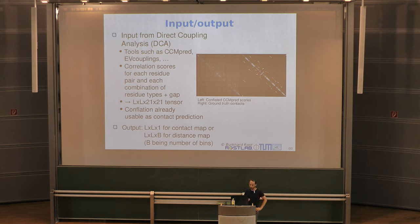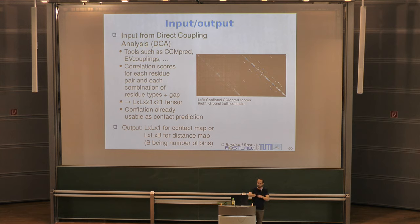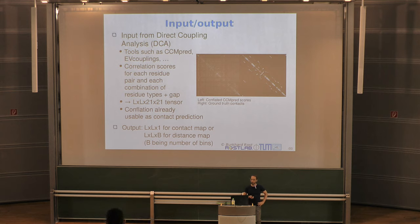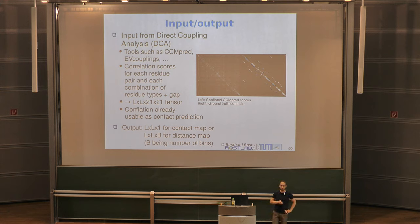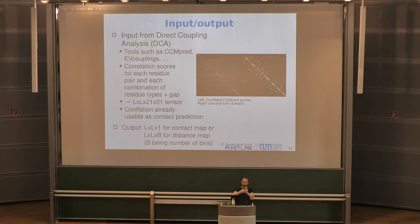In the end we have a tensor of size L × L × 21 × 21, or from a deep learning perspective L × L × 441. For a large protein with, say, 800 residues, this can be gigabytes in size. What you can do is conflate all these channels and produce just one channel. Tools like CCMPRED — hence the 'pred' in the name — were actually used as contact predictors, but they have been superseded by more sophisticated systems.